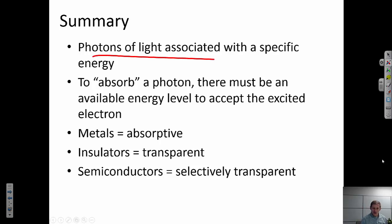So in review, photons of light are associated with a specific energy. In order to absorb a photon, we have to excite an electron from the valence band up to some unoccupied space. So this is easy to do for metals because there are unoccupied orbitals immediately above those occupied orbitals. It's very difficult in insulators, things with large band gaps, at least in the visible part of the spectrum. Semiconductors, it's going to be very wavelength dependent and very dependent on the band gap of that particular semiconductor.